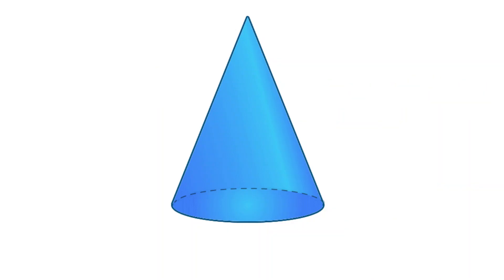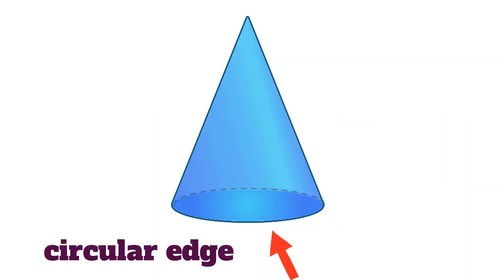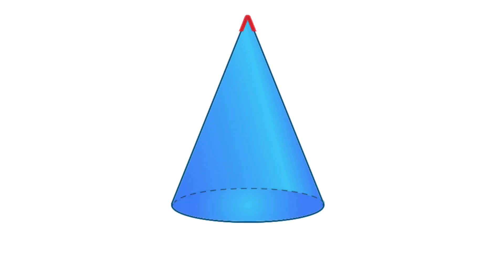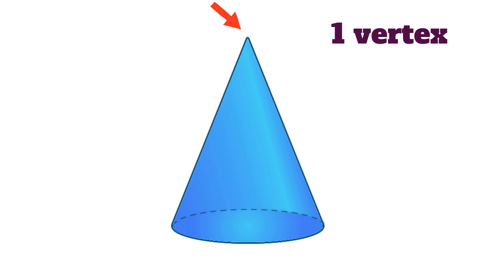Next one is cone. It has two faces — one flat face and one curved face. It has one circular edge. It has one vertex only; you can also call it a point.